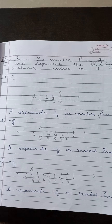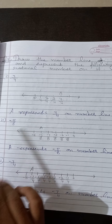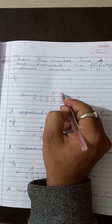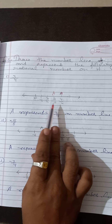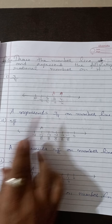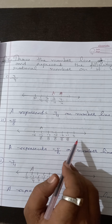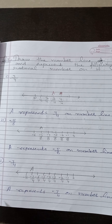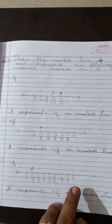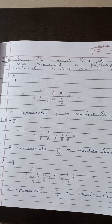Question number 4: draw the number line and represent the following rational numbers. For 3 by 4: divide the segment between 0 and 1 into four equal parts and mark the third part — that is 3 by 4. For minus 5 by 8: go to the left of zero, divide into 8 parts, mark the fifth — that is minus 5 by 8.